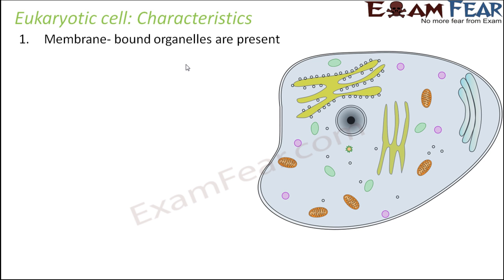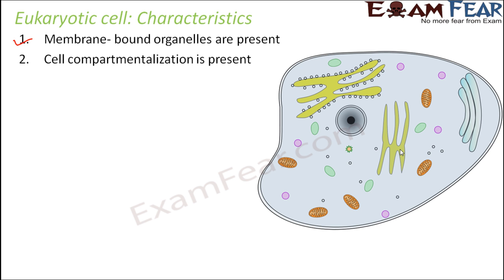Membrane-bound organelles are present — this is the basic thing about eukaryotes. True nucleus: cells with a true nucleus, that is, cells with membrane-bound organelles. This yellow-colored structure is one organelle which is surrounded by a membrane, and this is another organelle which is also surrounded by a membrane. So every cell organelle is surrounded by a membrane.